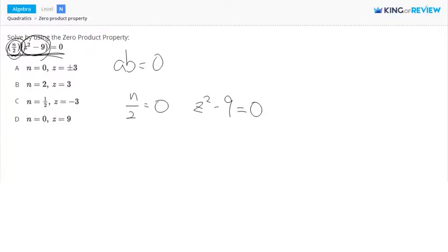Alright, so when is n over 2 equal to zero? Well, if you multiply 2 to both sides, we're going to get n equals zero. So that's when n is equal to zero.